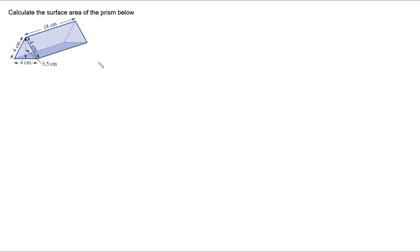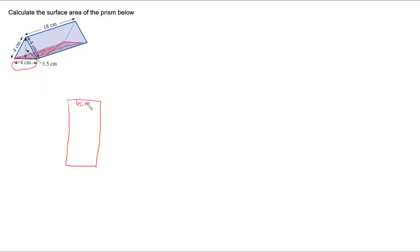To calculate the surface area of a triangular prism we have to work out what all the shapes are. One of the things we can do to help us is draw a net. I'm going to start with the shape that the triangular prism is resting on — the bottom rectangle. Its short side is 4cm and its long side is 18cm, which is the length of the prism.